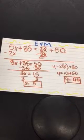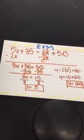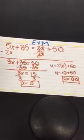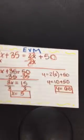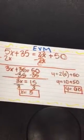Then we solved for Y. We plugged in for X, which was 5. So we did Y equals 2 times 5 plus 50, which got us Y equals 60.